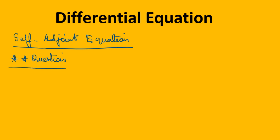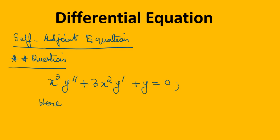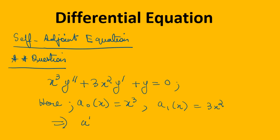Consider this equation given to us: x³y'' + 3x²y' + y = 0. Here, a₀(x) is x³ and a₁(x) is equal to 3x². That implies a₀'(x) is equal to 3x², which is actually equal to a₁(x).